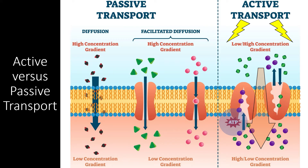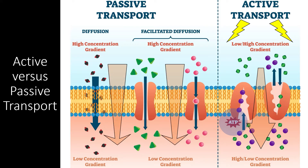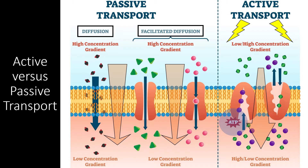By contrast, passive transport does not require energy. No energy is needed because all forms of passive transport are moving molecules from an area of high concentration to an area of low concentration. Passive transport includes simple diffusion through the plasma membrane, as well as facilitated diffusion through ion channels and carrier proteins.